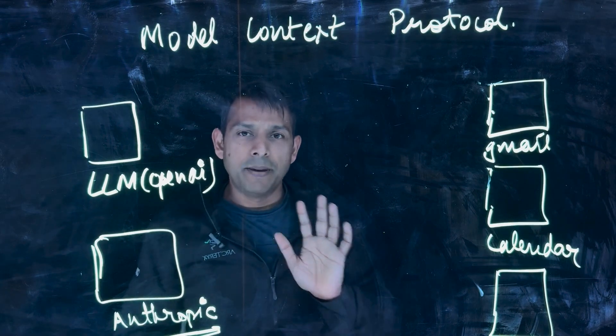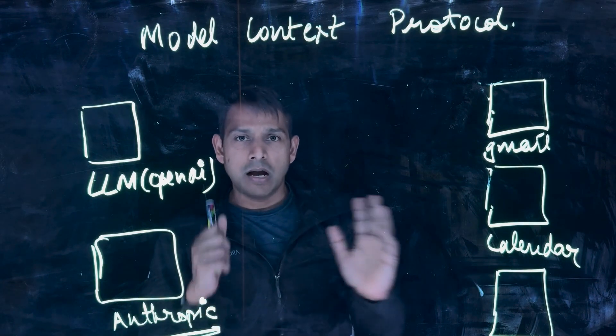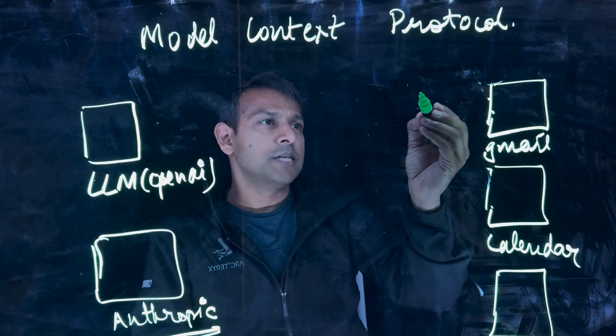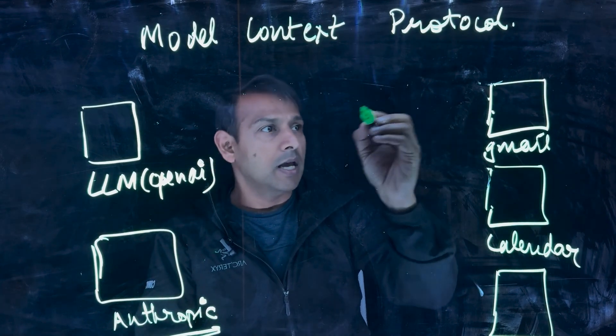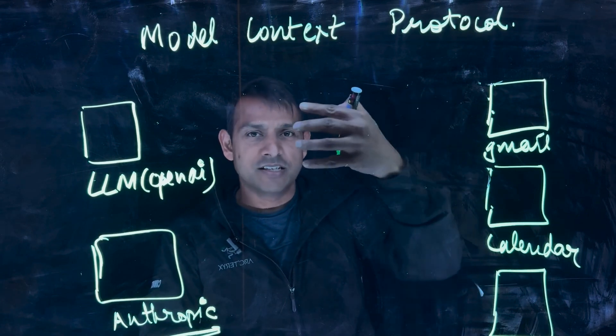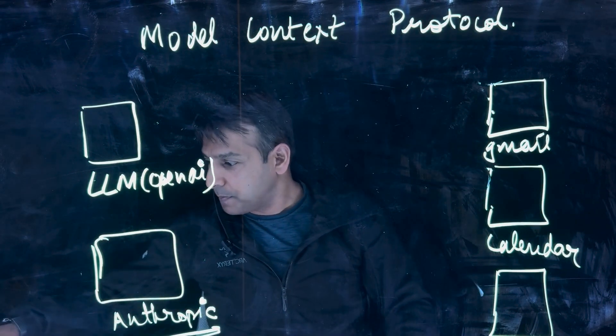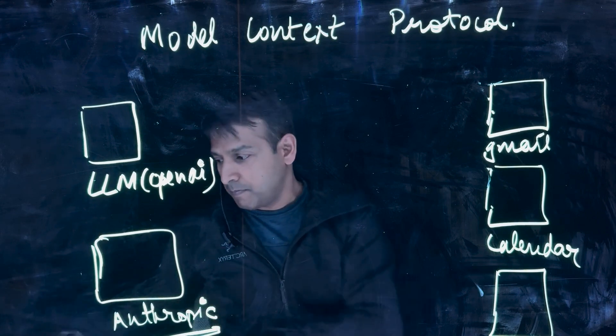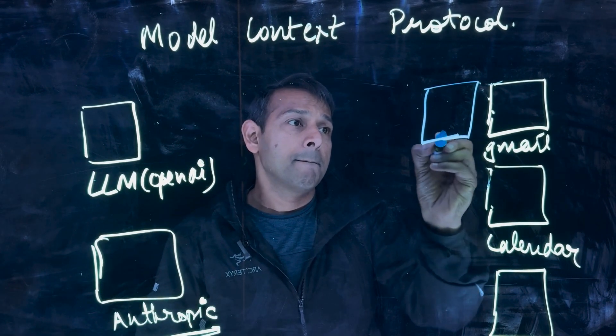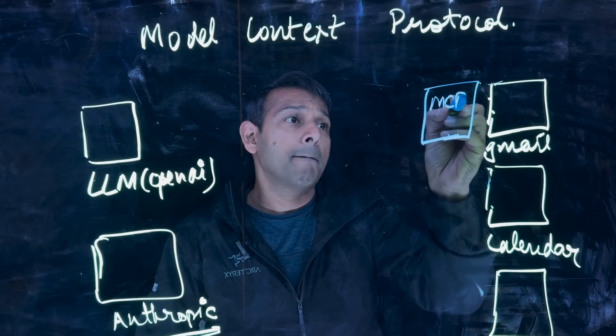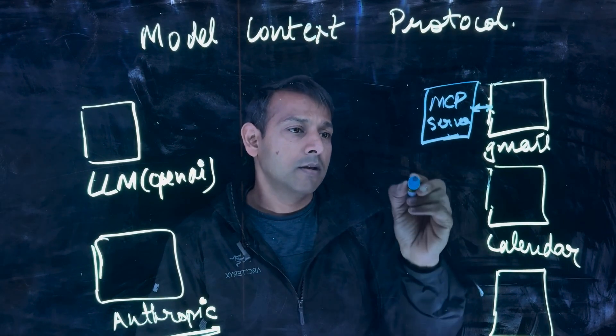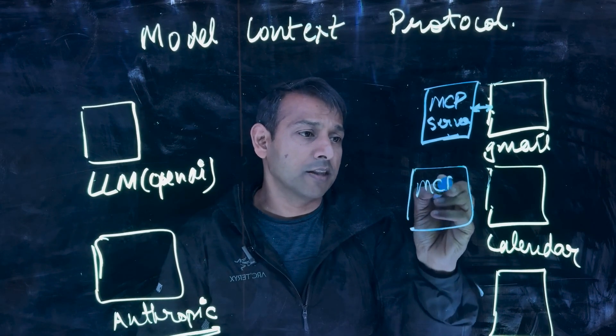So let's look at a basic MCP architecture and how MCP works. One of the core concepts is an MCP server. The MCP server sits in front of each of these tools and provides a standard interface. So this is an MCP server which interfaces with Gmail. This is an MCP server that interfaces with calendar.